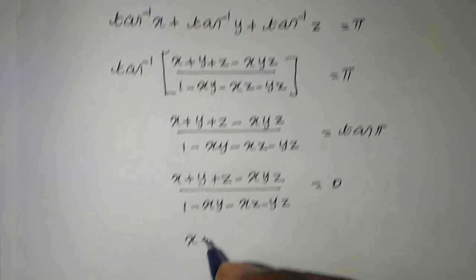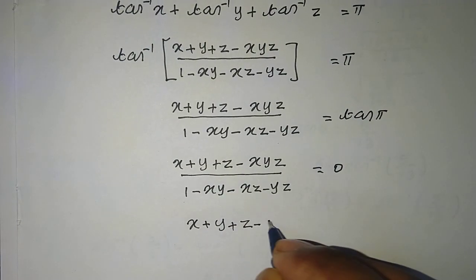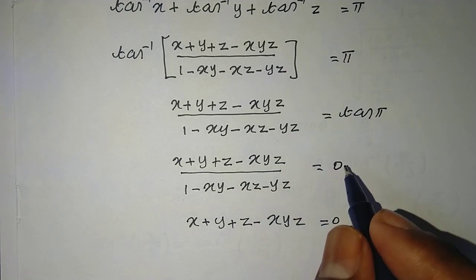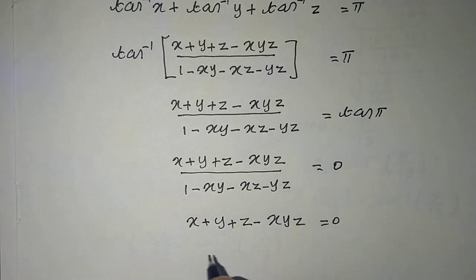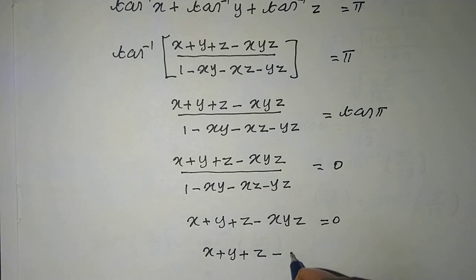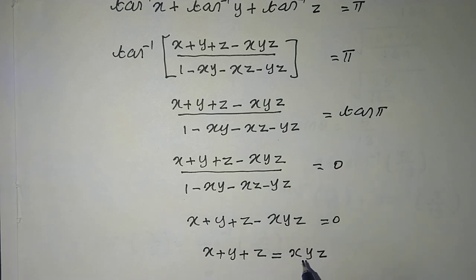Therefore, x plus y plus z minus xyz equals 0, since multiplying the denominator by 0 gives 0 on the right side. Rearranging, we get x plus y plus z equals xyz. Hence proved.